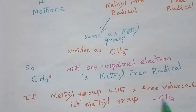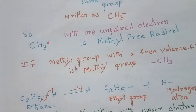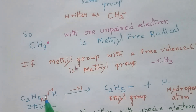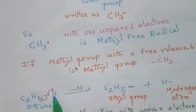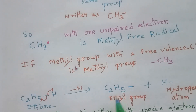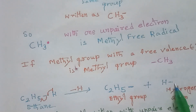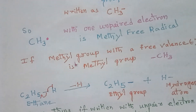Similarly, for ethane (C2H6), this can be written as C2H5–H. The bond between carbon and hydrogen cleaves homolytically, so hydrogen gets one electron and carbon gets one electron. We get the ethyl group: C2H5 with a small dash, and the hydrogen atom H with a small dash.